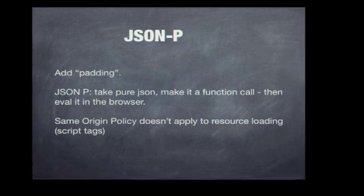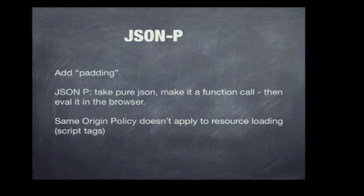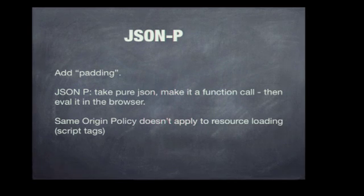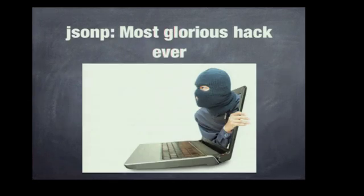So JSONP comes along — JavaScript Object Notation with Padding. You take some pure JSON data and make it a function call, then eval it in the browser. It's a way to get around the same origin policy, because you're basically telling the browser to load a resource, and that resource is actually a dynamic piece of data, but the browser doesn't know that. I like to think this is the most glorious hack ever — if there was a top five of elegant hacks, this is just wonderful and terrifying at the same time.